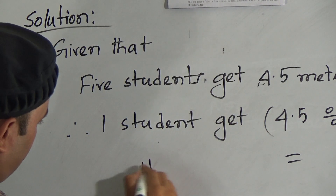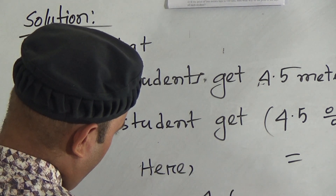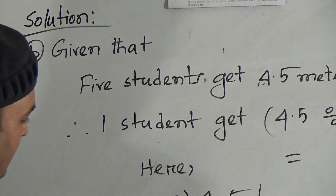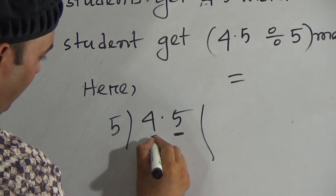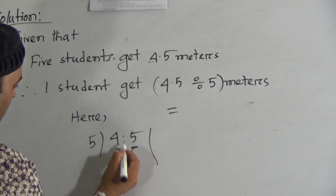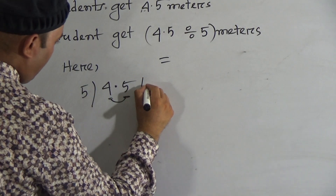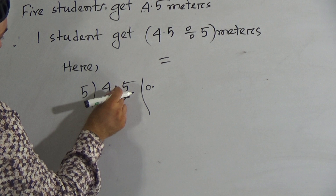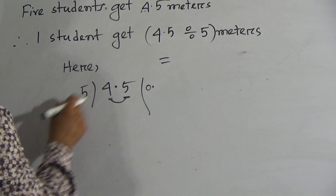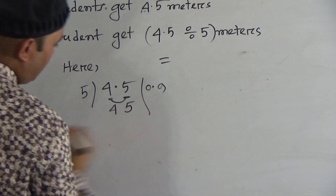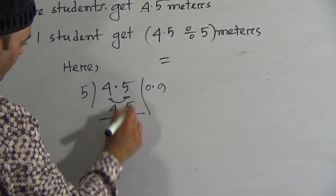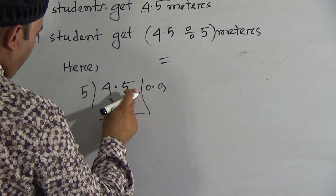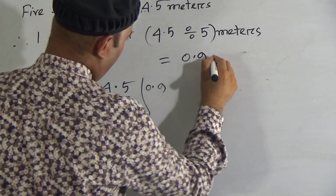Then, what will be here? 4.5 divided by 5. After taking the first digit, 4 is smaller than 5. So we will take 5 including it and it makes 45. But look here — here is a decimal point. For this point, we can write here 0 point. Now suppose there is no decimal point, then it will be 45. 5 nines are 45, remainder 0. So after dividing 4.5, it will be 0.9 meters.